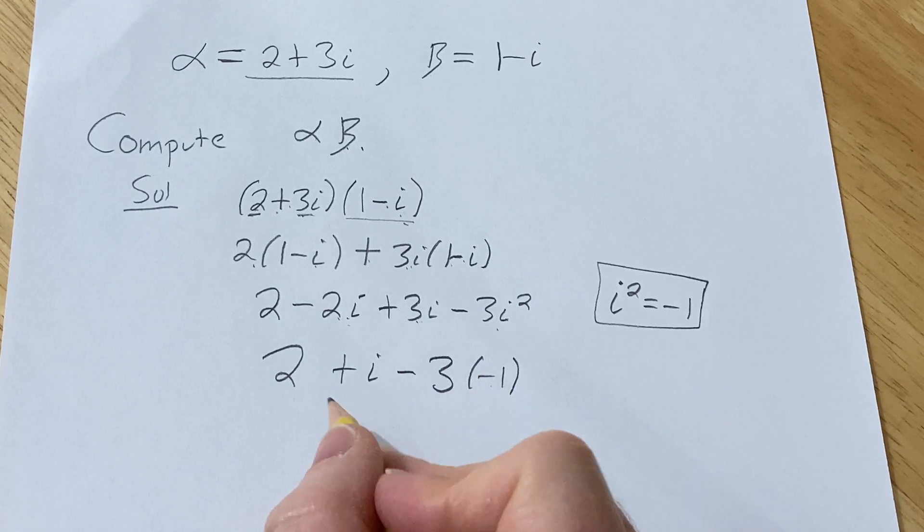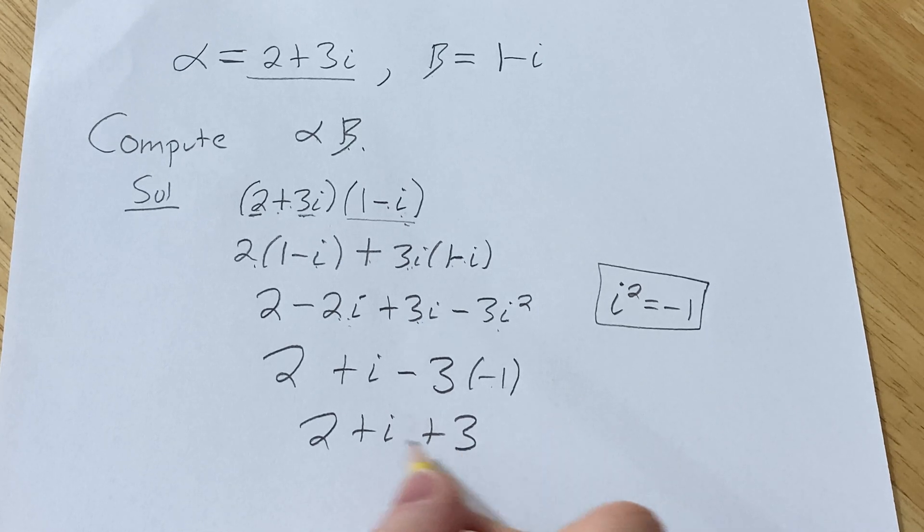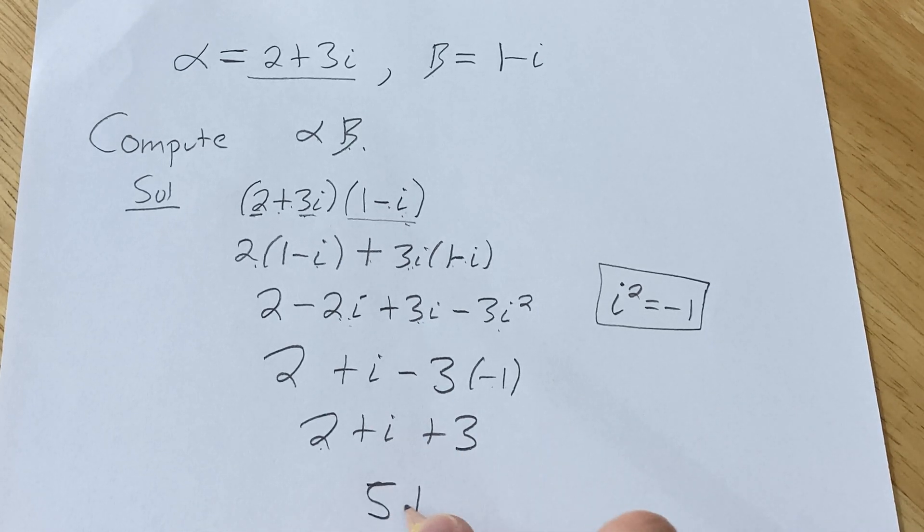Alright, so the negative and negative is positive. So this is 2 plus i plus 3. 3 plus 2 is 5. So we get 5 plus i.